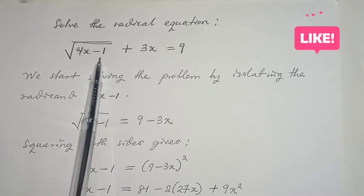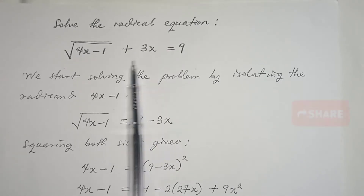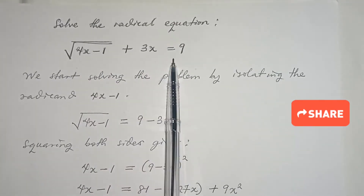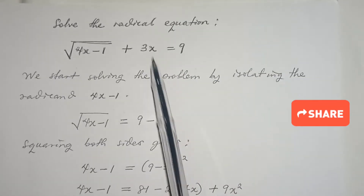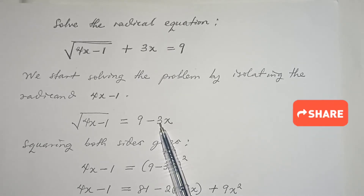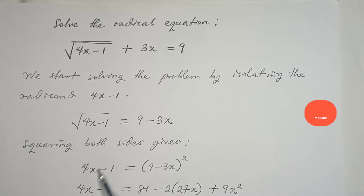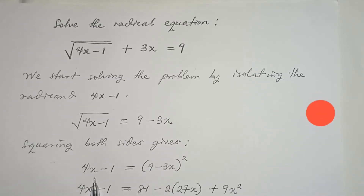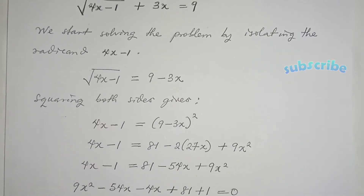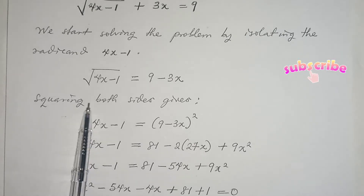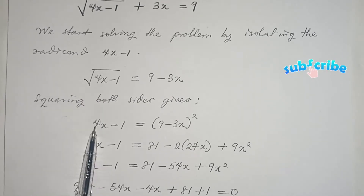In this case the radical is 4x minus 1. We are going to take everything away from the root of (4x minus 1). Subtracting 3x from both sides gives you the root of (4x minus 1) on the left-hand side and 9 minus 3x on the right-hand side. The next step is to square both sides, which gives you 4x minus 1 equals (9 minus 3x) squared. This is because squaring the square root of a number gives the number itself.